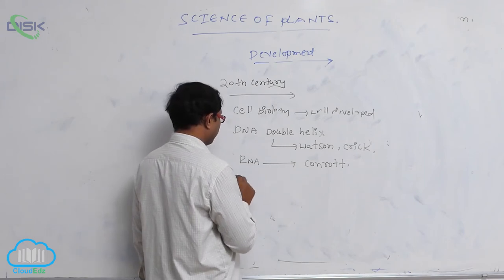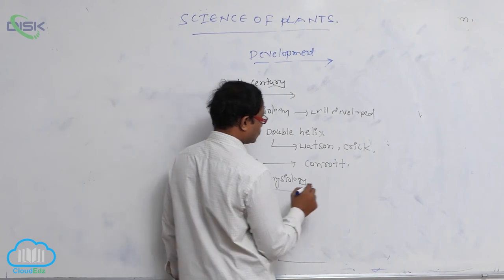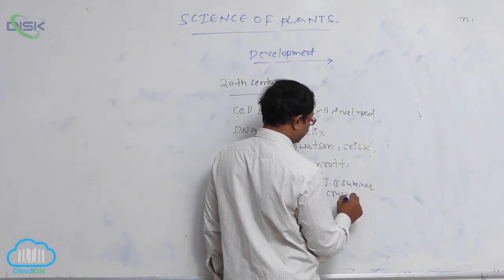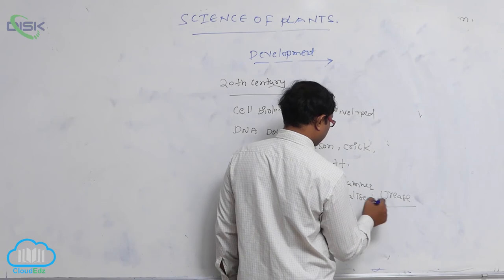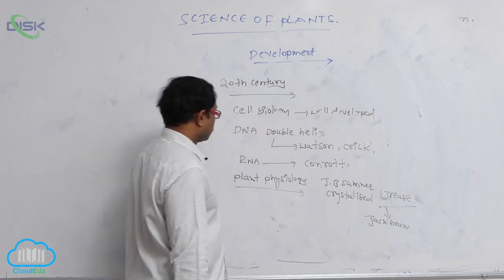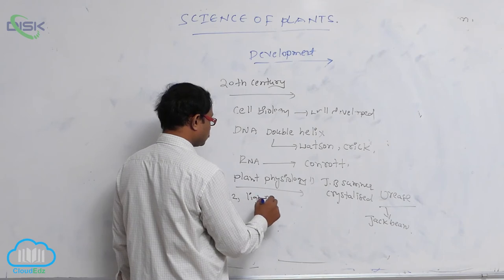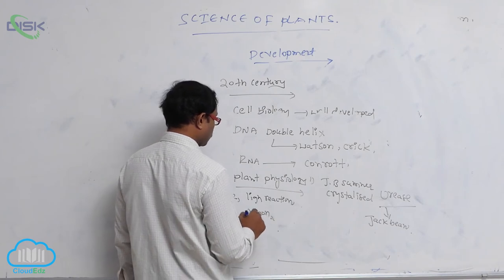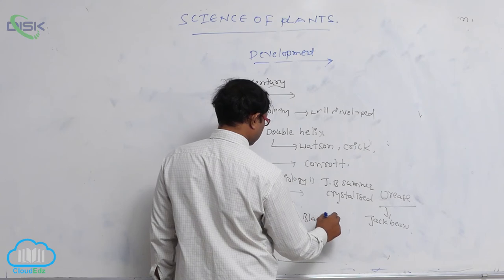Plant physiology is also well developed. J.B. Sumner crystallized the urease enzyme for the first time from jack bean. Light reactions were explained by Arnon, Hill, Blackman, and Emerson.